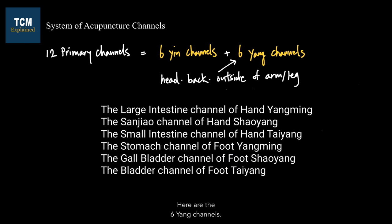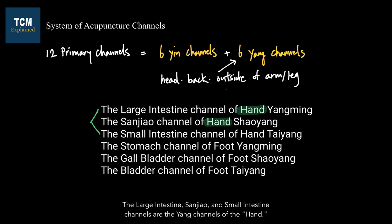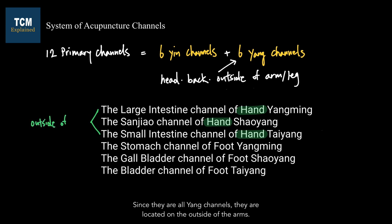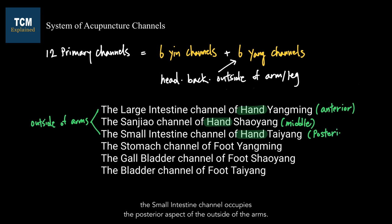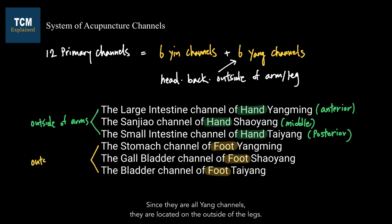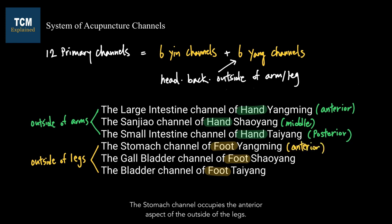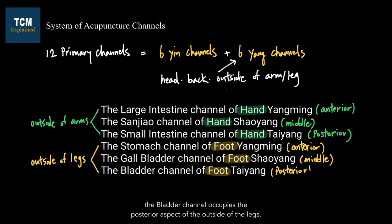Here are the six yang channels. The large intestine, sanjiao, and small intestine channels are the yang channels of the hand. Since they are all yang channels, they are located on the outside of the arms. The large intestine channel occupies the anterior aspect, the sanjiao channel occupies the middle aspect, and the small intestine channel occupies the posterior aspect of the outside of the arms. The stomach, gallbladder, and bladder channels are the yang channels of the foot, located on the outside of the legs. The stomach channel occupies the anterior aspect, the gallbladder channel the middle aspect, and the bladder channel the posterior aspect of the outside of the legs.